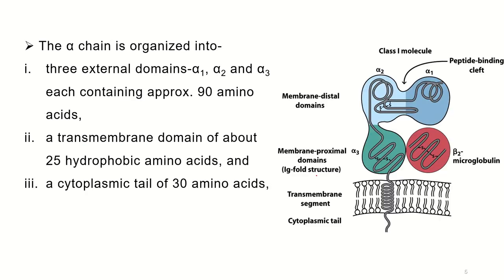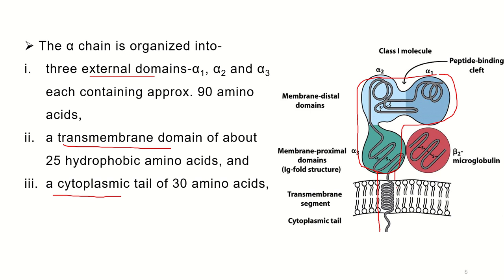The alpha chain is organized into three domains. There are three external domains — alpha 1, alpha 2, and alpha 3 — one transmembrane domain, and one cytoplasmic tail.